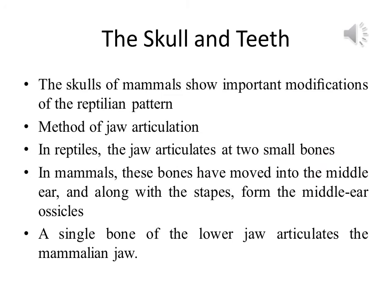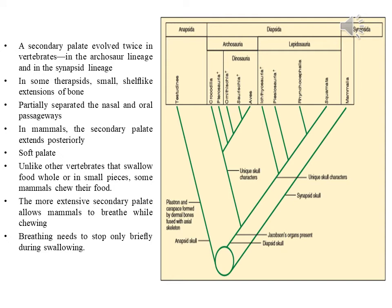Next is the skull and teeth. The skulls of mammals show important modifications of the reptilian pattern. One feature zoologists use to distinguish reptilian from mammalian skull is the method of jaw articulation. In reptiles, the jaw articulates at two small bones at the rear of the jaw, while in mammals these bones have moved into the middle ear and, along with the stapes, form the middle ear ossicles. A single bone of the lower jaw articulates the mammalian jaw.